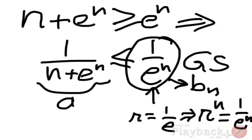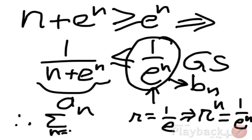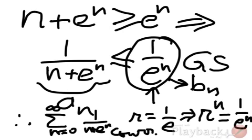So this, therefore, the sum of n from 0 to infinity of 1 over (n + e^n) will have to be convergent. That's it. Thank you very much. And signing off. Thank you.